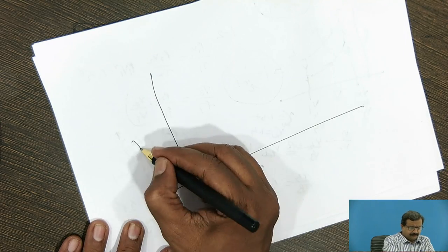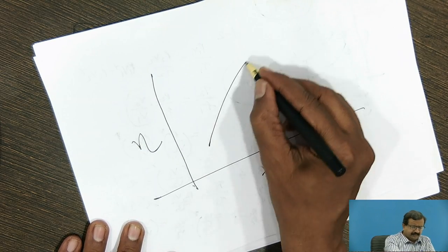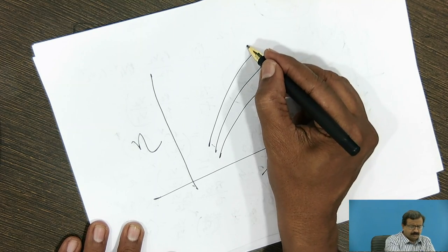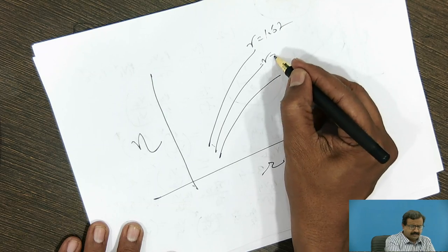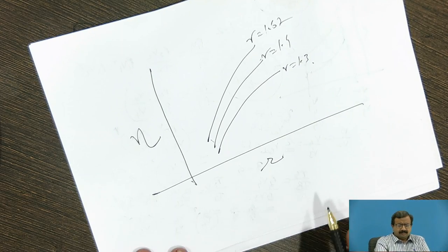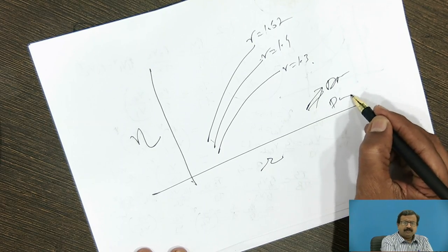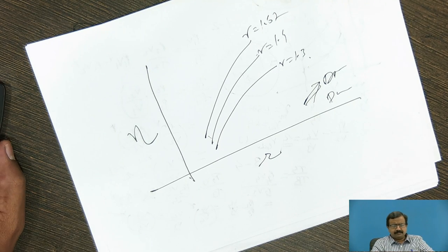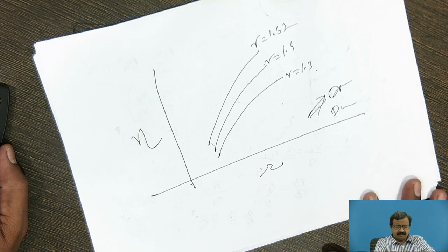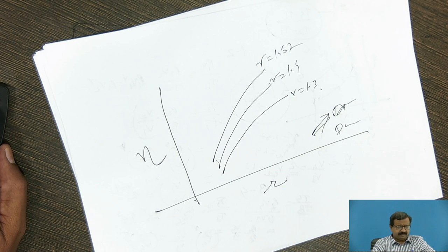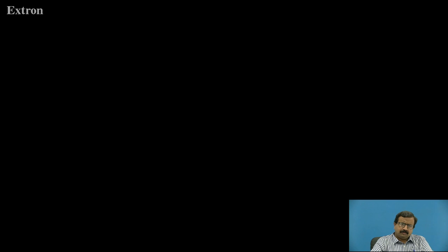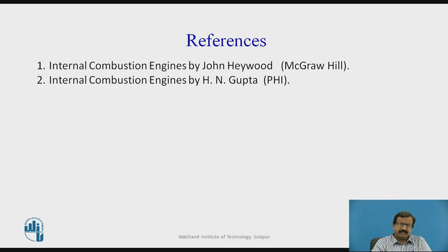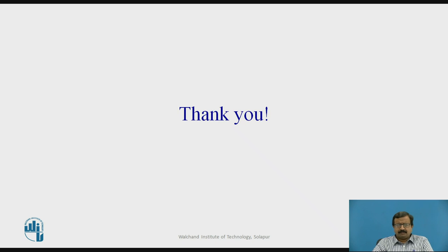Plotting efficiency versus compression ratio gives curves for different values of gamma (1.67, 1.4, and 1.3), showing how efficiency increases with compression ratio. The same logic can be applied to derive efficiency for the diesel cycle and dual cycle, which will be covered in the next sessions. Recommended references are 'Internal Combustion Engines' by Heywood and 'Internal Combustion Engines' by Gupta. Thank you for patient listening.